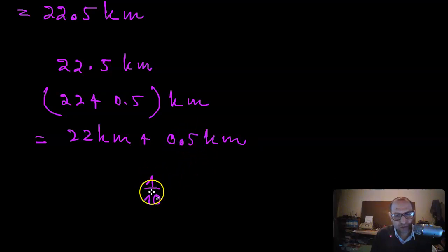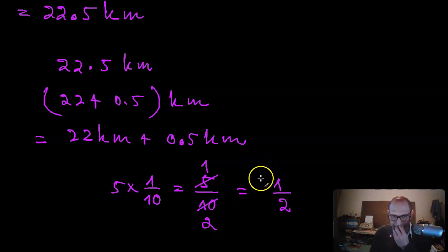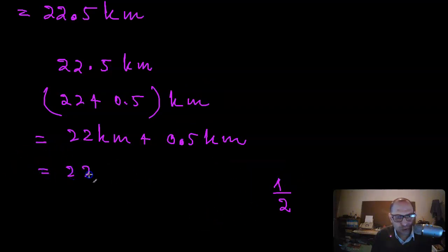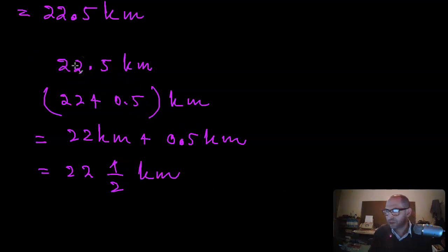The 0.5 is in the tenths place, meaning 5 × (1/10) = 5/10 = 1/2. So 22.5 kilometers is the same as 22 and one-half kilometers. That is the actual meaning of the decimal number. There is one more exercise — number 12 — which we will do in the next video.